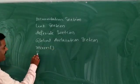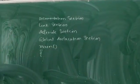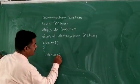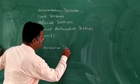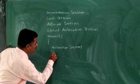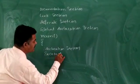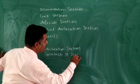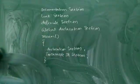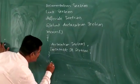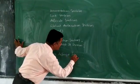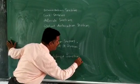Inside the main function, there is an opening brace, then the local declaration section, and the executable statement section. After the main function comes the user-defined functions.